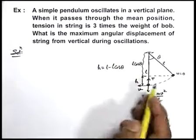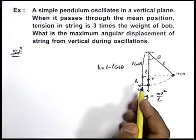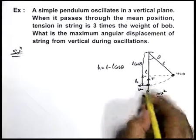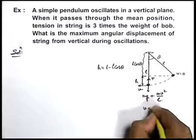So it is quite obvious by energy conservation we can say, at the bottom most point the speed can be written as root 2 g h.